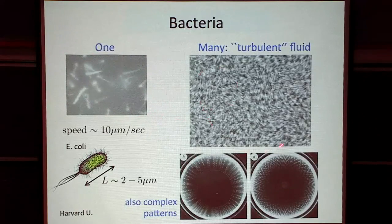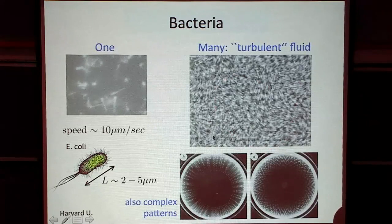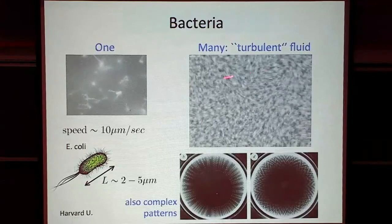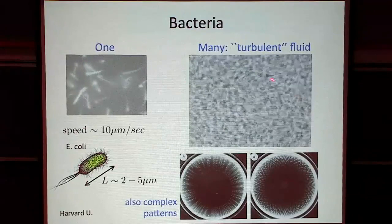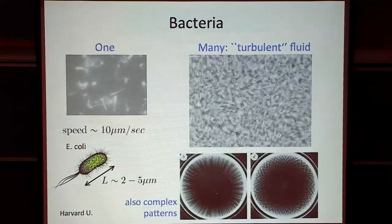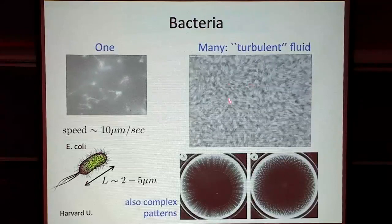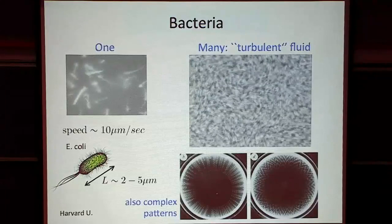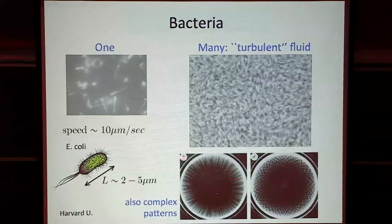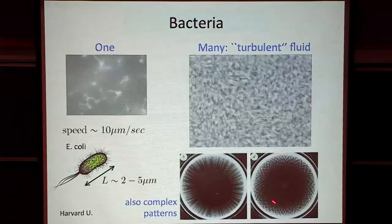When you have many E. coli together in a dense suspension, the behavior is really quite different. If you feed them well, give them a lot of food on a rich substrate, they swirl around and it looks sort of like a turbulent fluid — people have called this bacterial turbulence. There's a lot of swirly motion and vorticity. If you starve them, they can actually form very complex patterns: dotted patterns, or even more complex ones. How do these bacteria organize into this kind of structure?